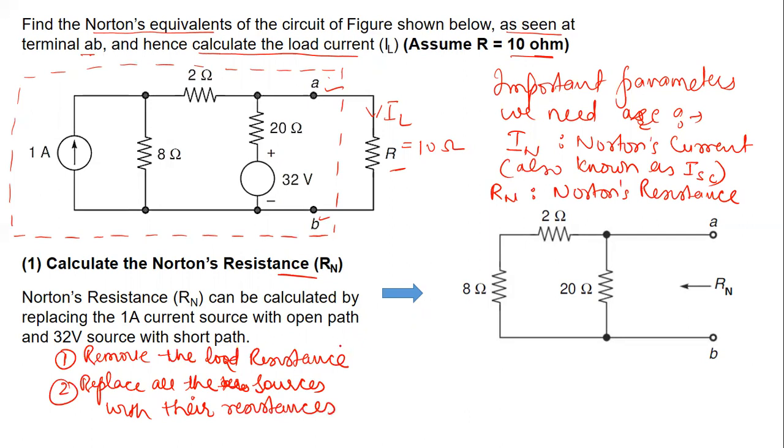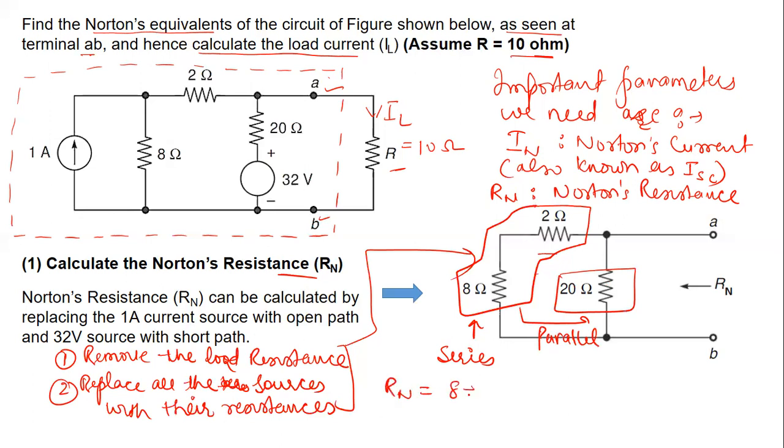Now, by doing so, the circuit that is obtained is given here, this one. So in this circuit, these two resistances are in series. And the resultant is in parallel with this one. So RN is equal to 8 plus 2 is in parallel with 20. So it is 20 by 3 ohm.